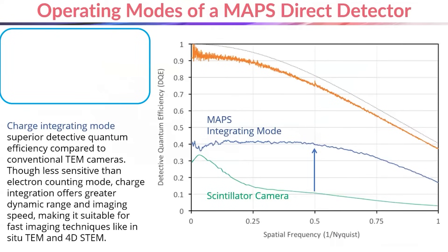MAPS detectors can be operated in two different imaging modes. The basic mode of operation is called integrating mode, in which the electrons incident on the detector generate a charge in each of the pixels and that charge is then read out as the signal to form the image. This leads to a significant boost in detective quantum efficiency, especially at high spatial frequencies compared to scintillator coupled cameras, which allows MAPS detectors to collect information with greater spatial resolution for any given electron beam dose.